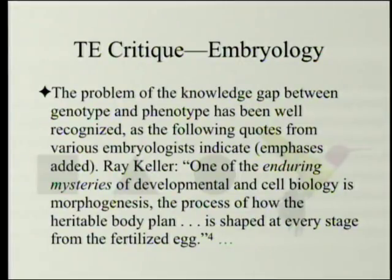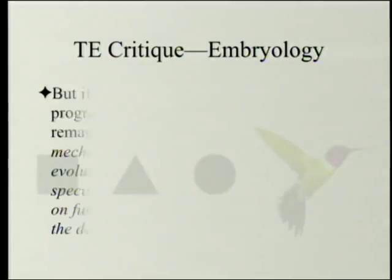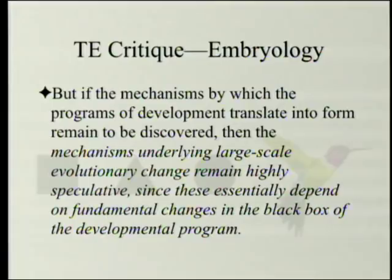Ray Keller states: 'One of the enduring mysteries of developmental and cell biology is morphogenesis — the process of how the heritable body plan is shaped at every stage from the fertilized egg.' Multiple similar quotes from embryologists are in the original book. If the mechanisms by which programs of development translate into forms remains to be discovered, then the mechanisms underlying large-scale evolutionary change remain highly speculative, since they depend on fundamental changes in what is essentially a black box.